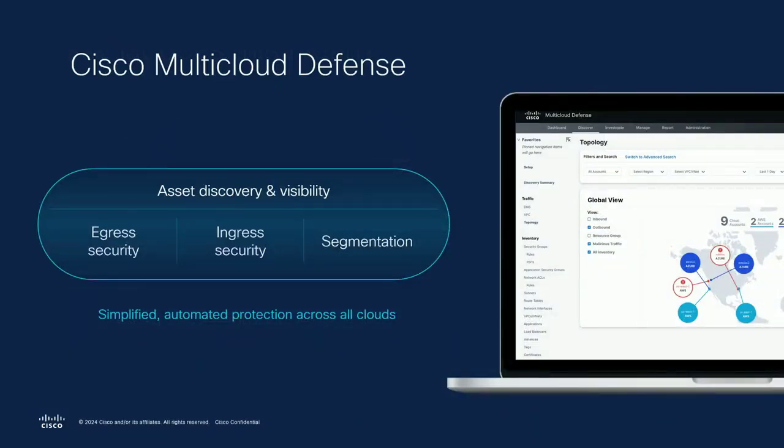And so with that — Cisco Multi-Cloud Defense. Multi-Cloud Defense provides four primary capabilities: Asset Discovery and Visibility; Egress Security, including FQDN filtering, URL blocking, URL categorization, GeoIP restrictions, ransomware protection, and command and control detection — all from Cisco's Talos threat feeds; Ingress Security, including basic web application firewalling and denial of service security; and basic segmentation, which is VPC-to-VPC segmentation as well as providing connectivity across your cloud environments.